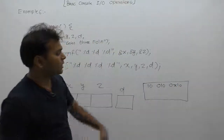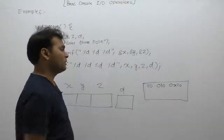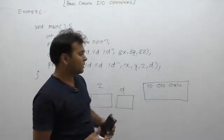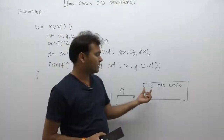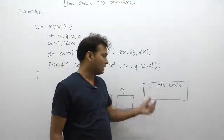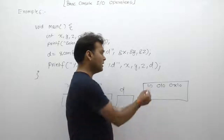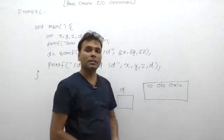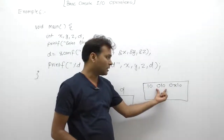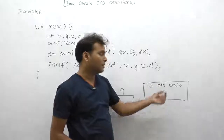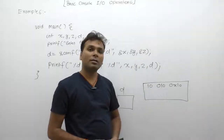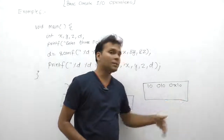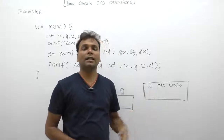These are three inputs entered by the user. In the first case, according to the C standard by default: 10 is considered as a decimal integer, 010 is considered as an octal number (starts with zero), and 0x10 is considered as hexadecimal (starts with zero x).